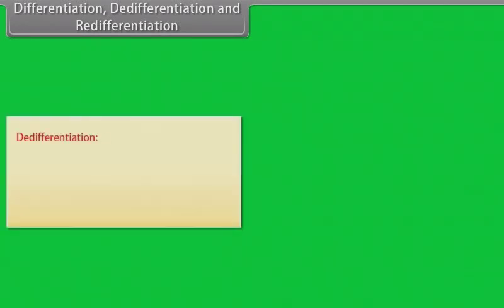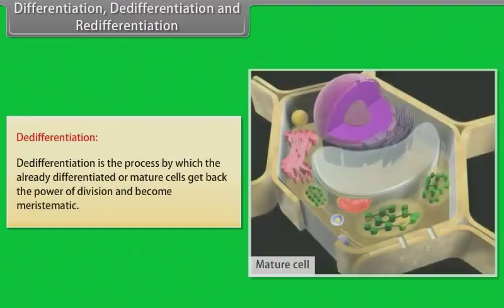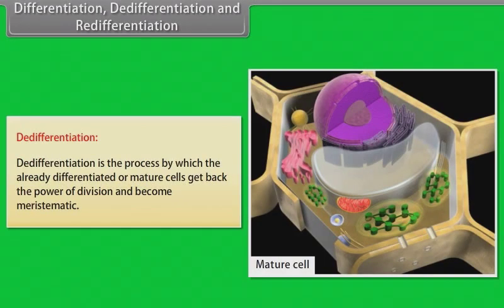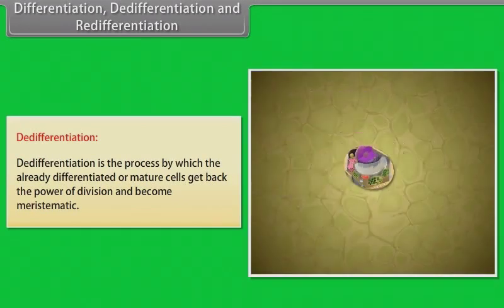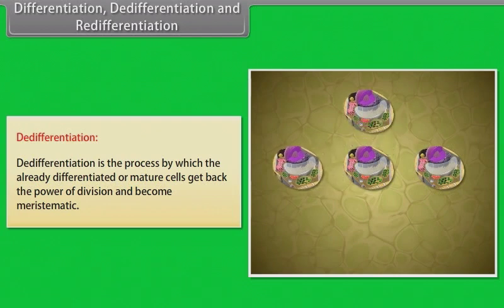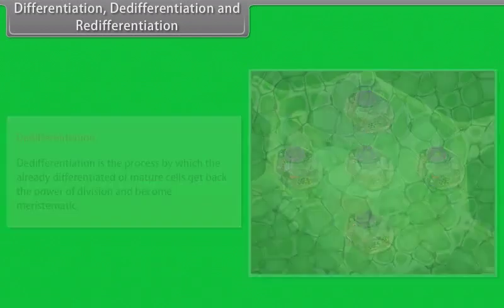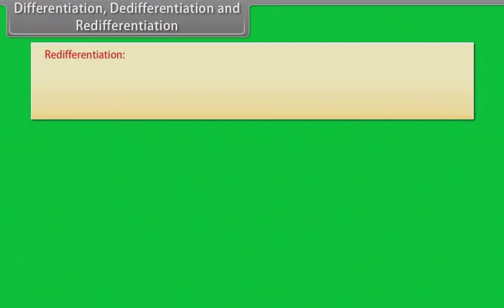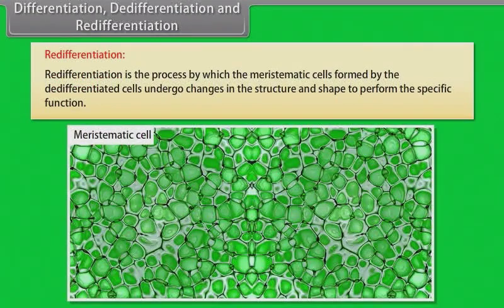De-differentiation and re-differentiation. De-differentiation is the process by which the already differentiated or mature cells get back the power of division and become meristematic. Re-differentiation is the process by which the meristematic cells formed by de-differentiated cells undergo changes in the structure and shape to perform the specific function.